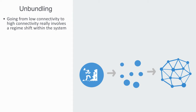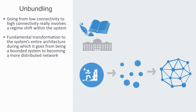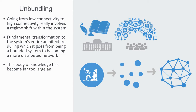This is a very deep and fundamental transformation to the system's entire architecture, but during the process it goes from being a bounded system to becoming a more complex distributed network. For example, up until a few hundred years ago, universities used to teach each individual almost all the technical knowledge that we had within just a few years. With the rise of modern science and engineering, this body of knowledge has become far too large and complex for any single person to learn.